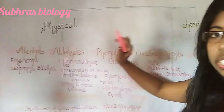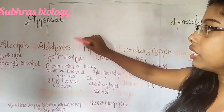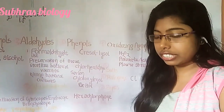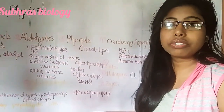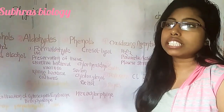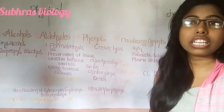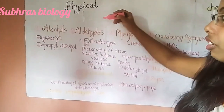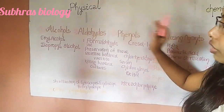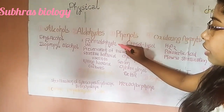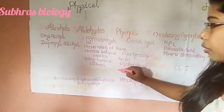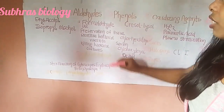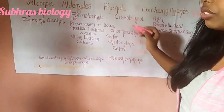The second chemical agent is aldehyde. It is bactericidal, sporicidal, as well as fungicidal — meaning it kills bacteria, spores, and fungi. So it is more frequently used than alcohols. Aldehydes are of three types: formaldehyde, glutaraldehyde, and orthophthalaldehyde (OPA).